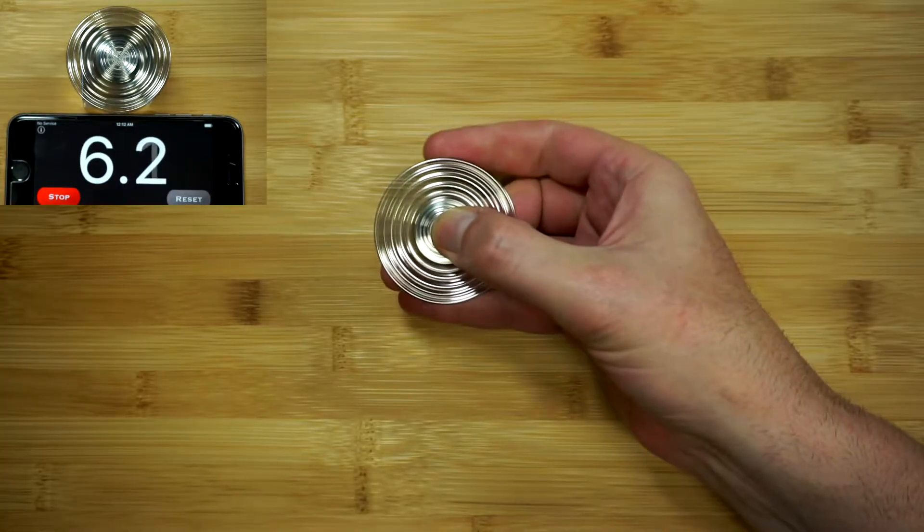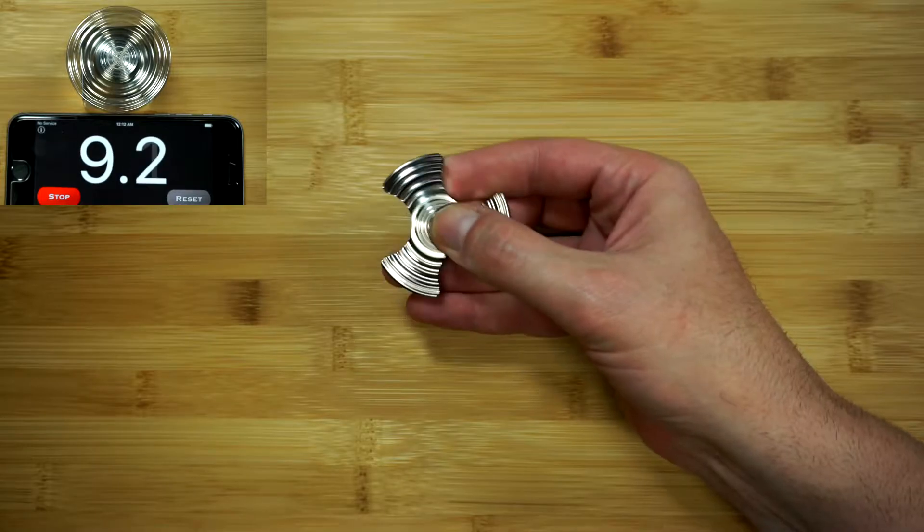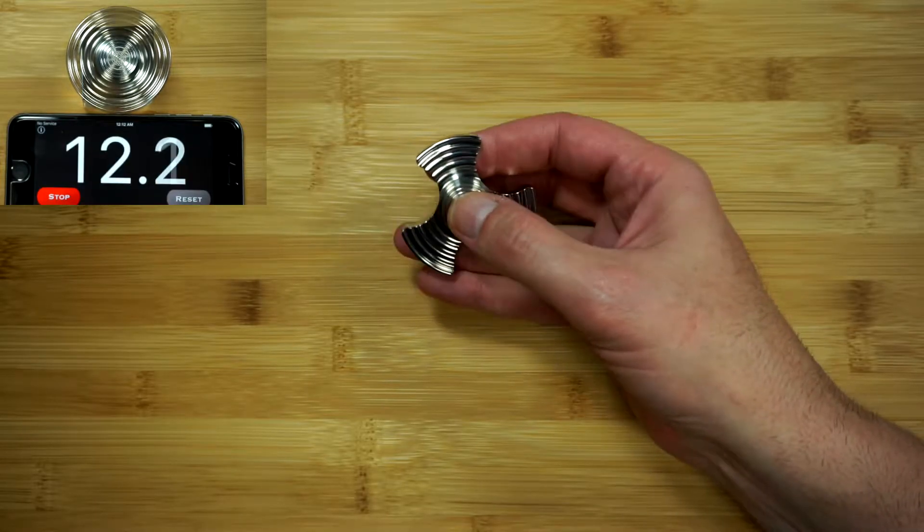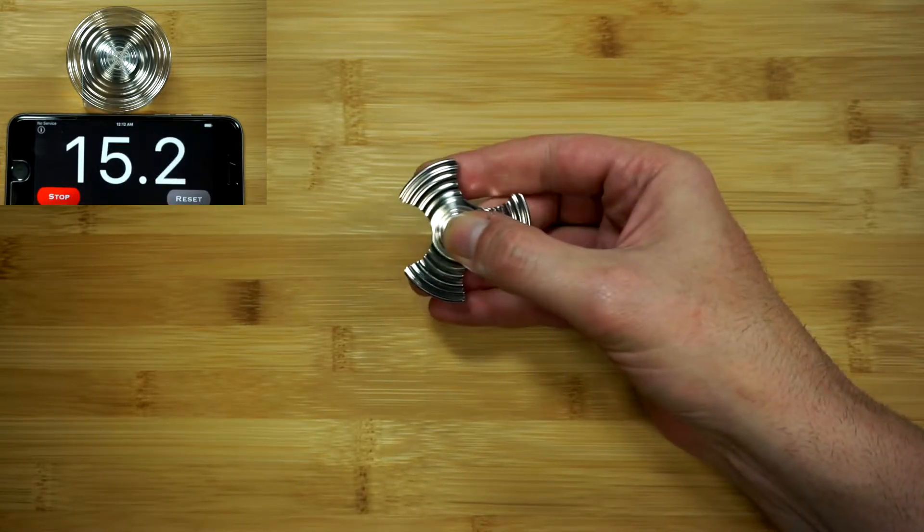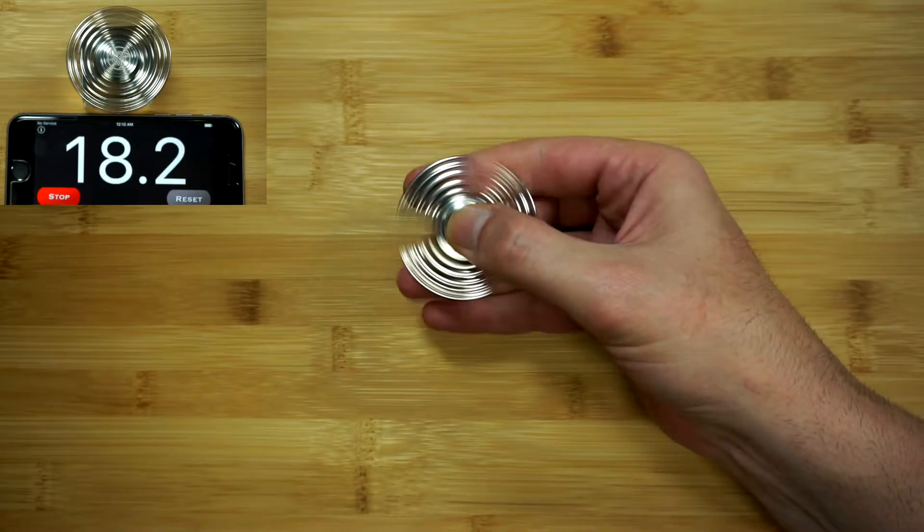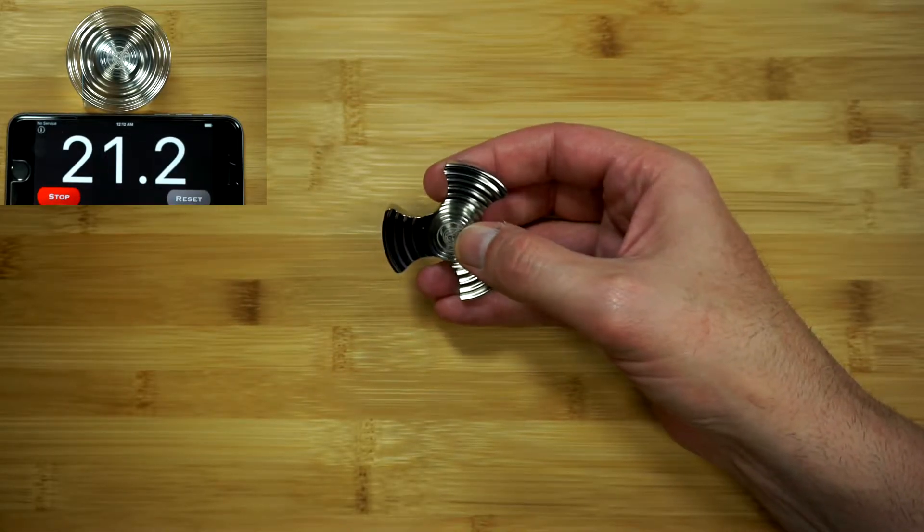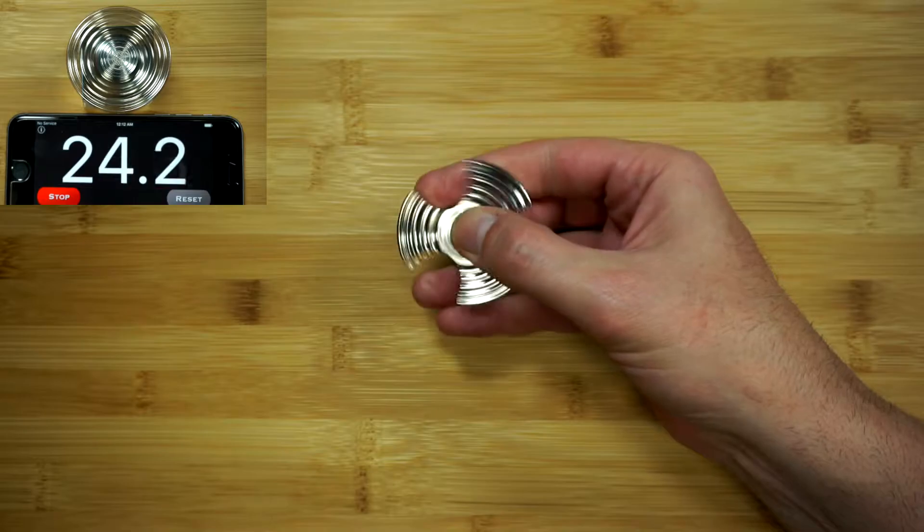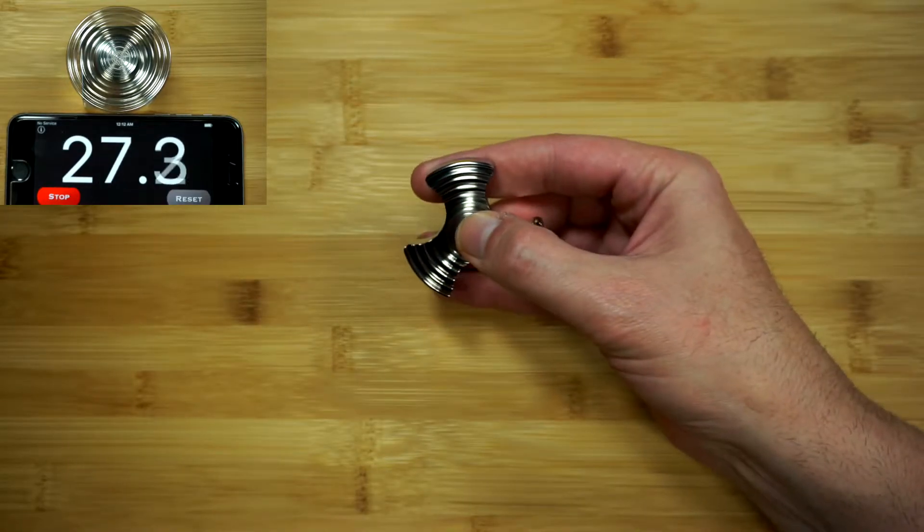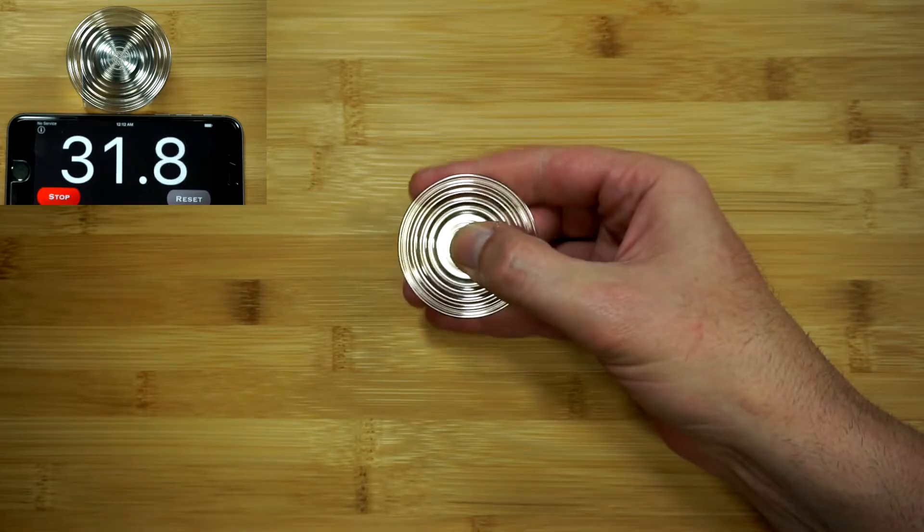Taking a look at the Vortrix, it is a tri-arm design and this one is in polished stainless steel. They do have it in brass, in what I'm not sure if it's media blasted or just a matte finish of stainless steel, polished stainless steel, and they also have a media blasted titanium.